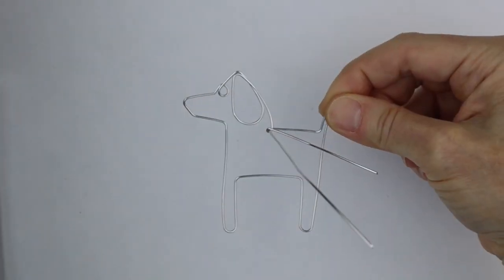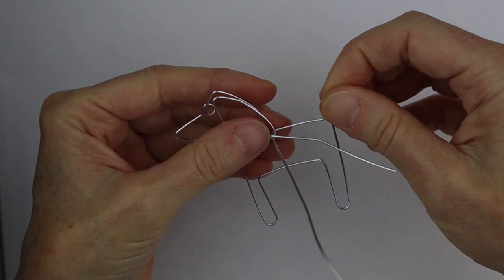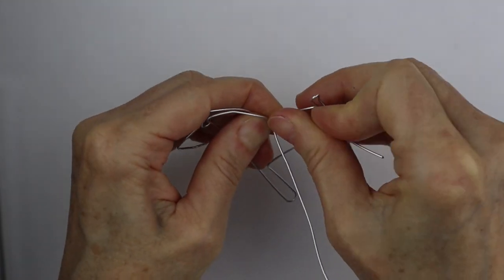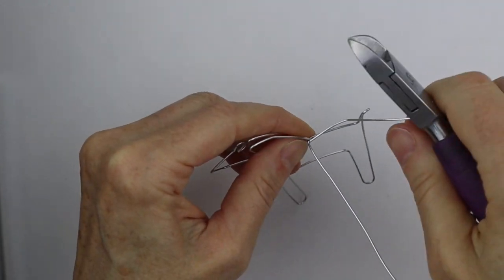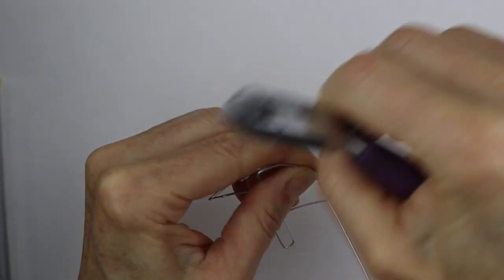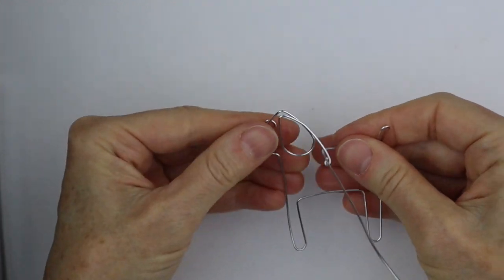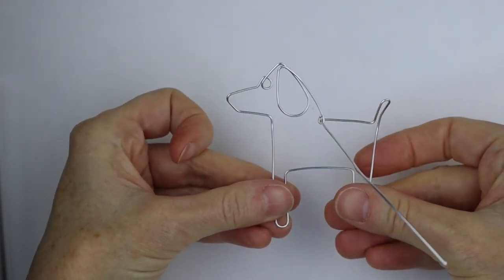Okay, cute little doggy. And then we want to clip this end. So we'll just clip it off. And if you want just the wire, you can do that. Or if you want to put some beads on it, he kind of looks like this.